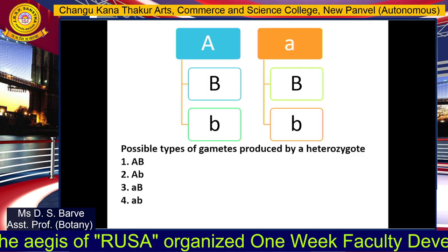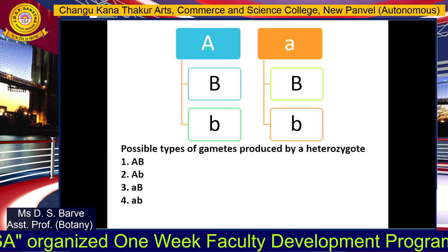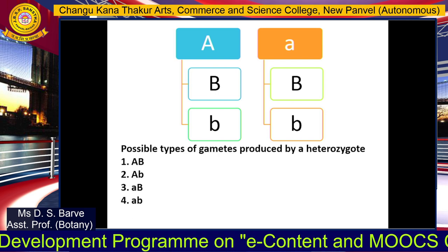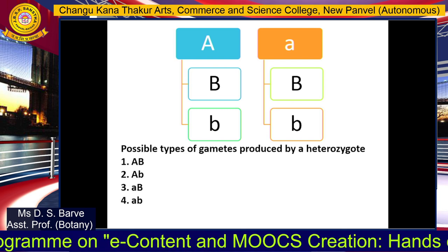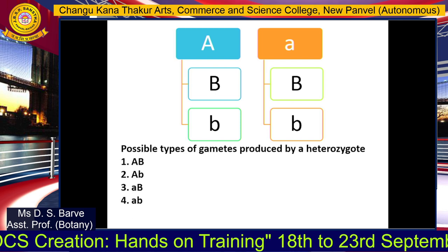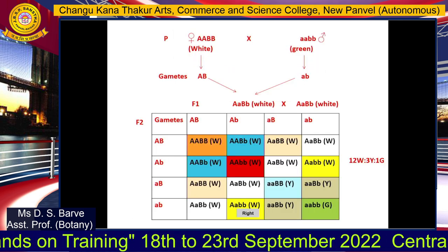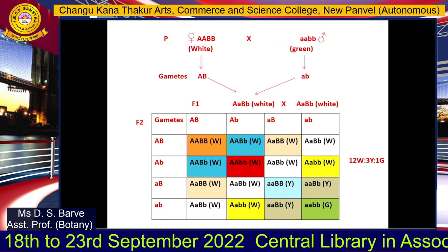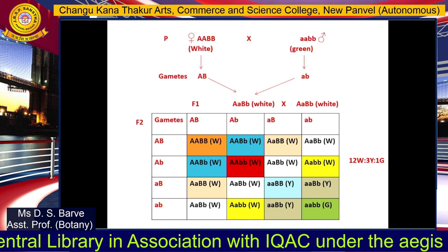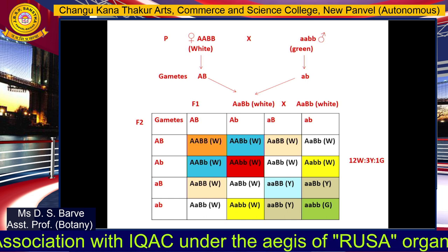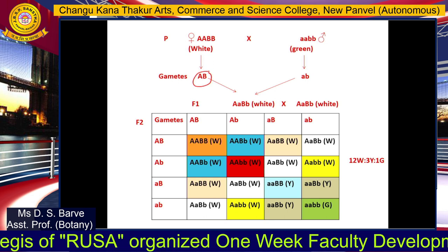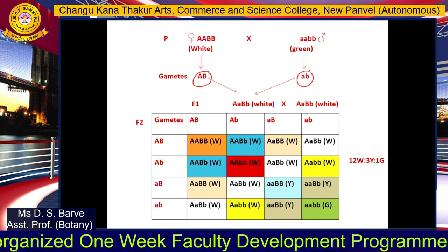A heterozygote at both loci produces four types of gametes, since capital A can combine with either capital B or small b, and similarly small a can combine with either capital B or small b. This is clearly seen with the help of a cross and a Punnett square. In the cross shown, the first parent is the homozygous white fruit plant with genotype capital A capital A capital B capital B, producing only one type of gamete: capital A capital B. The other parent is small a small a small b small b with green fruits, producing only the gamete small a small b.